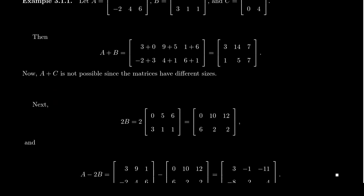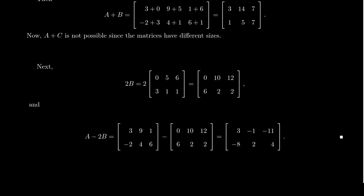All right. Scalar multiplication couldn't be easier for these situations either. If we take the matrix 2 times B, that means we're going to times 2 by the matrix B that was listed above. And we're just going to times each component by 2. So we take 2 times 0, which is 0. We take 2 times 5, which is 10. We take 2 times 6, which is 12. 2 times 3 is 6. 2 times 1 is 2. And then, again, 2 times 1 is 2, like you see there. That's how scalar multiplication is going to work.